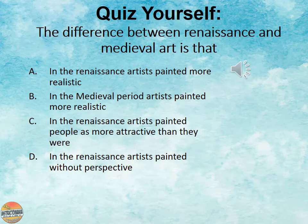All right, it's quiz time. The difference between the Renaissance and medieval art is: A, in the Renaissance artists painted more realistically; B, in the medieval period artists painted more realistically; C, in the Renaissance artists painted people as more attractive than they actually were; or D, in the Renaissance artists painted without perspective. It is A, children.